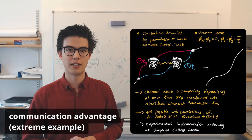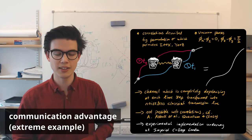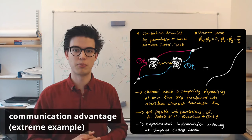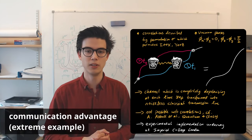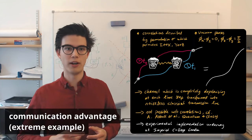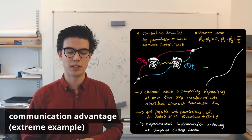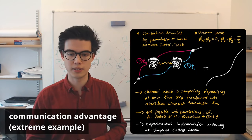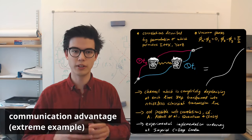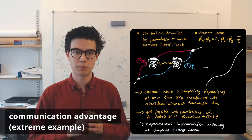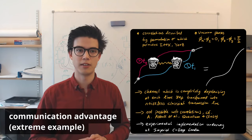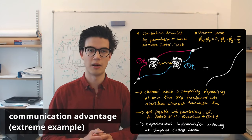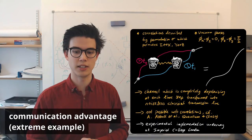Crucially, this relies on the correlations. Similar protocols have been proposed before — for example, Abbott and co-workers combined two independent completely depolarizing channels in a superposition of paths, finding non-zero classical capacity. However, without correlations the classical capacity never reaches one. Correlations are thus essential for this particular class of communication advantages. We also have an experimental collaboration underway at Imperial College London, where the quantum optics group is working to implement the ideas and communication advantages discussed here.